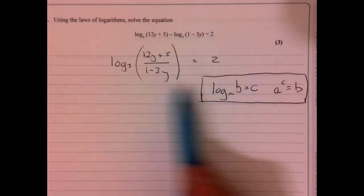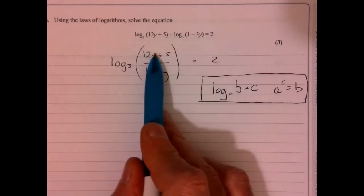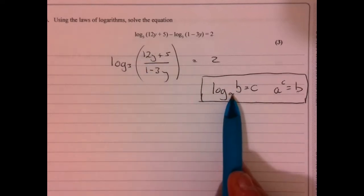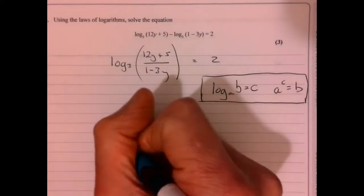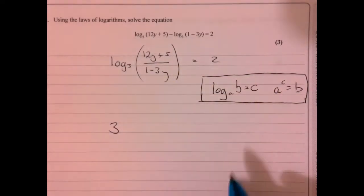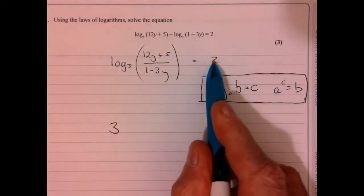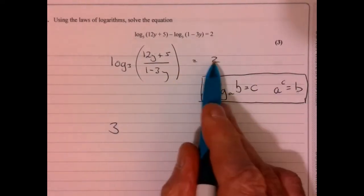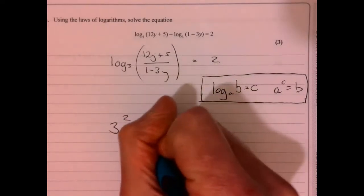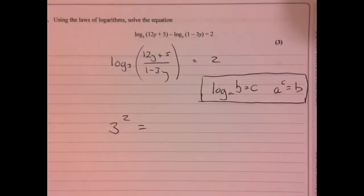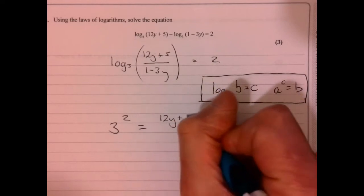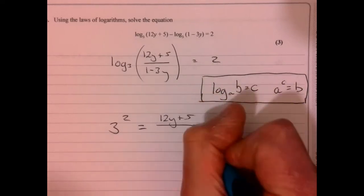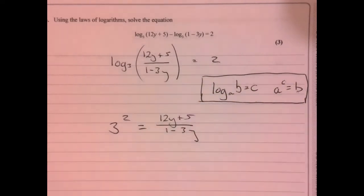All I've got to do is just think: how does that correspond to this up here? So A is the base, so that's 3 to the power of this thing over here. And then that equals B. From here on in, it should be pretty straightforward.